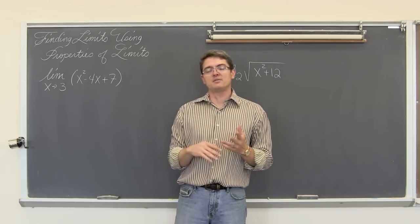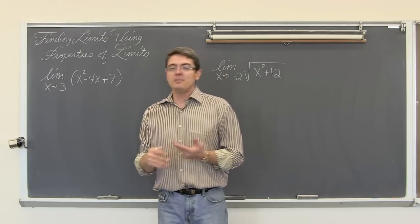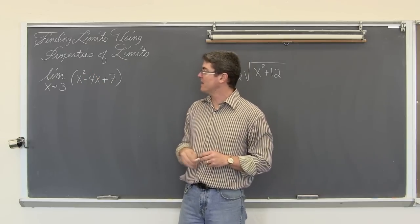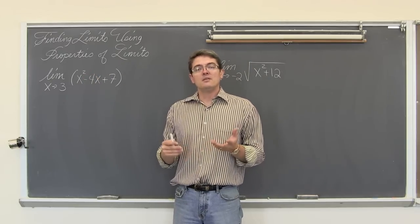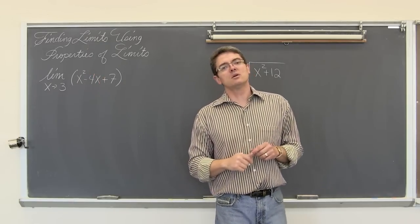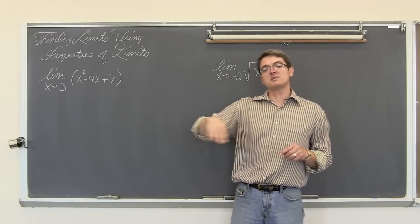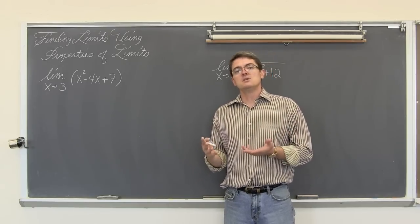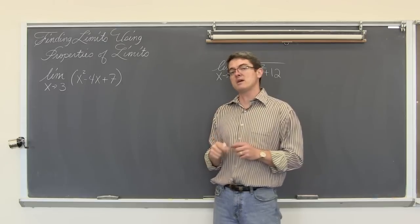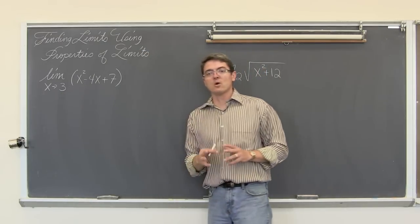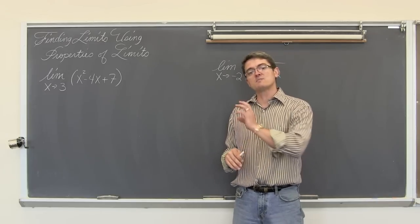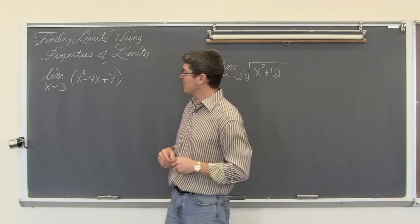With these problems, we are not going to need to check both the left and right-hand limit because we are taking the limit of x squared minus 4x plus 7. This is a polynomial — actually a parabola with one squared term. Parabolas are smooth and continuous and defined basically for all real numbers, so this graph is going to be smooth and continuous. When we let the x value approach 3, we can just plug in 3. We just learned that in the previous video on properties of limits.